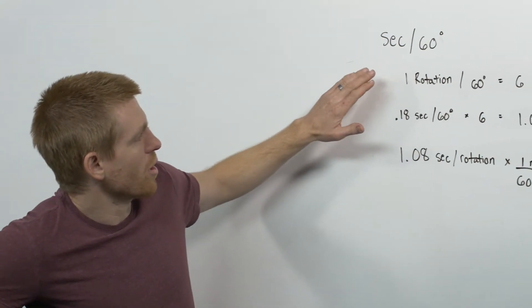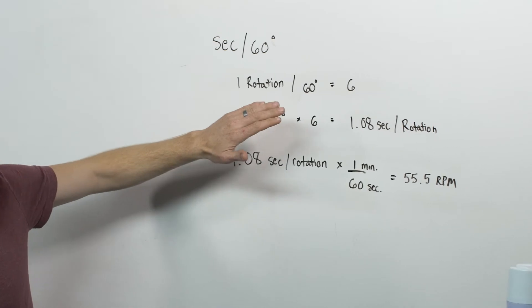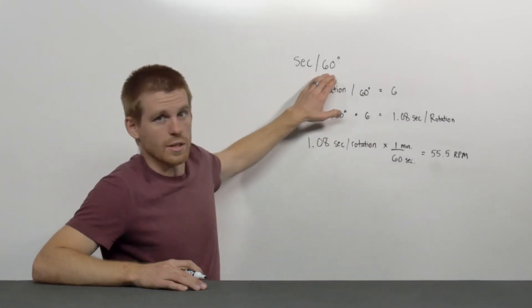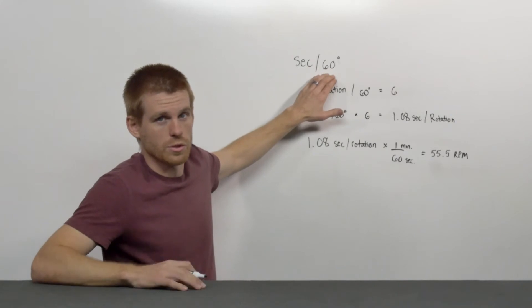Now, one rotation divided by 60 degrees equals six. So that tells me that 60 degrees is a sixth of a full circle.